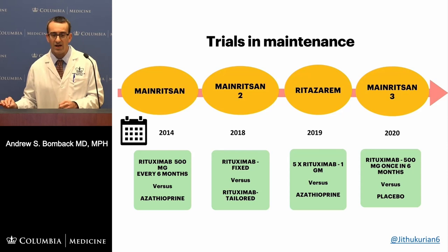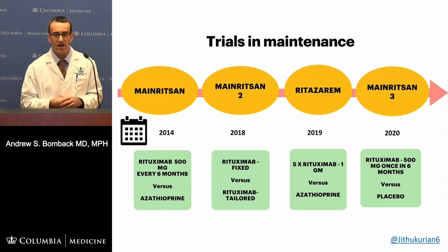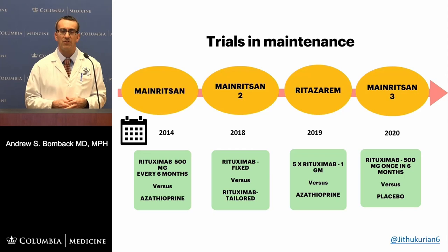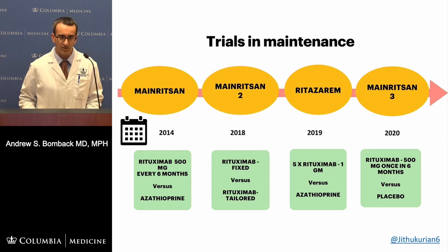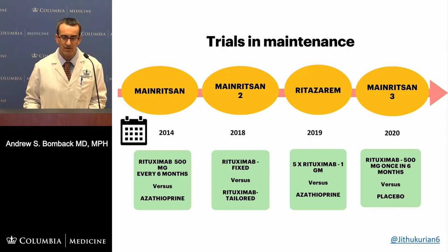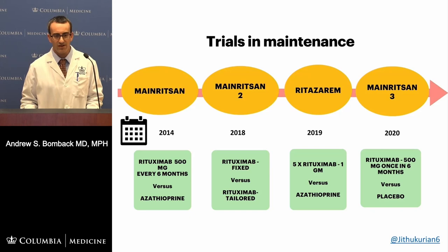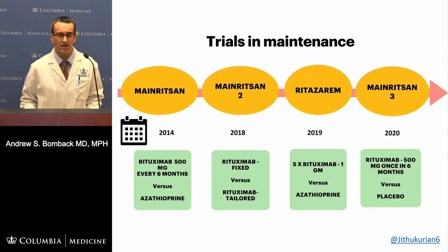However, we've moved away from azathioprine to preferentially using rituximab. This schema of trials has really put rituximab as the first or preferred maintenance regimen for our patients — credit to Jithu Kurian, who on Twitter had a beautiful thread summarizing pivotal trials of maintenance therapy in ANCA. Going from the Main RITSAN study in 2014 to Main RITSAN 3 in 2020, each trial adds information as to why we would use rituximab preferentially over azathioprine.